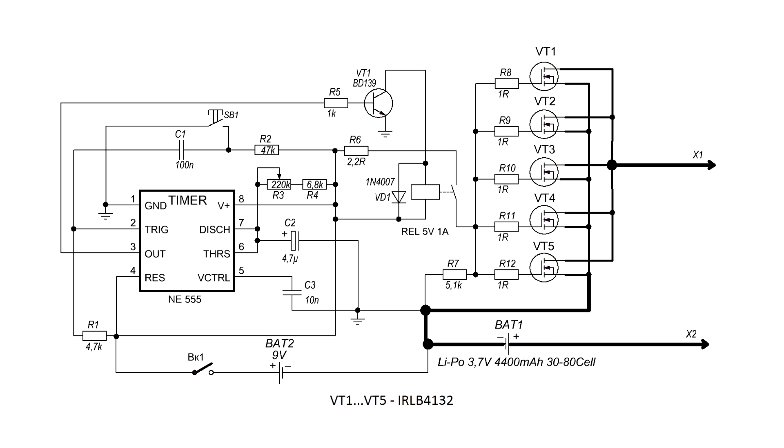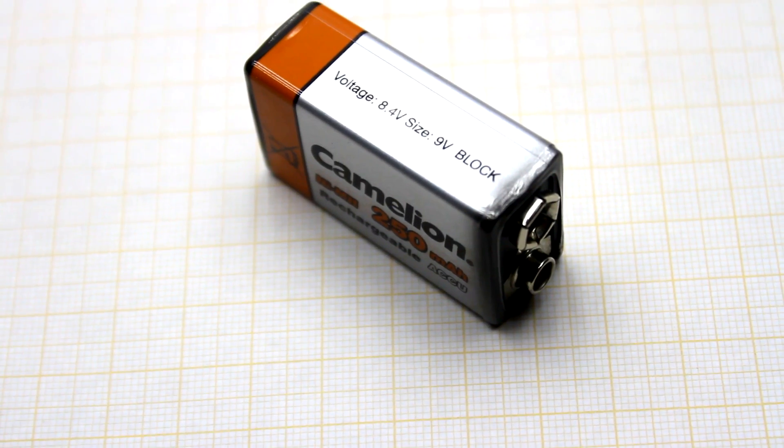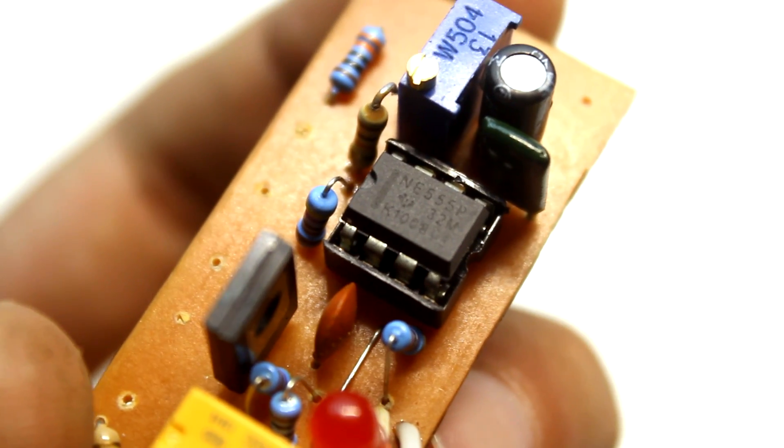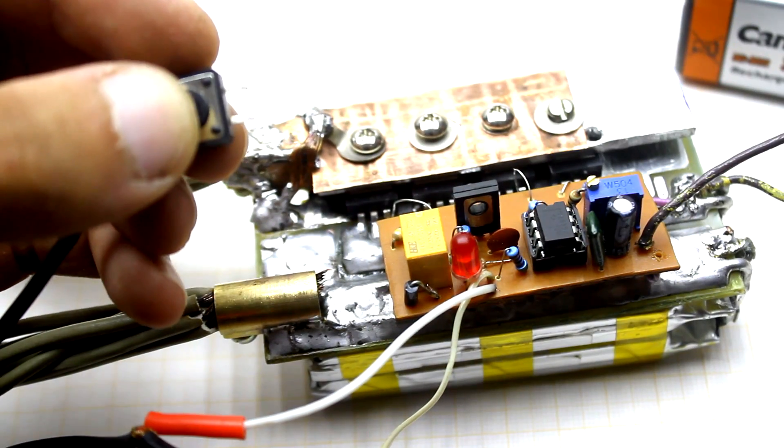As you noticed, in the circuit there are two power sources. First of powerful lithium polymer batteries and second is 9V battery. Secondary power supply is included for the normal operation of the timer. Voltage needs at least 4V depending on the manufacturer of the chip.